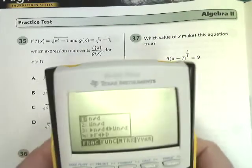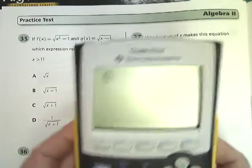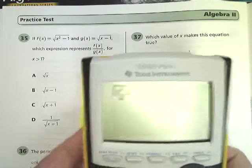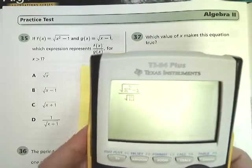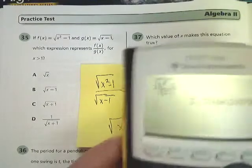So you could go in and type in a fraction. You just do the square root of x squared minus 1 over the square root of x minus 1, which is exactly what it would look like. I'm going to hit enter, and then I could try my answer choices.